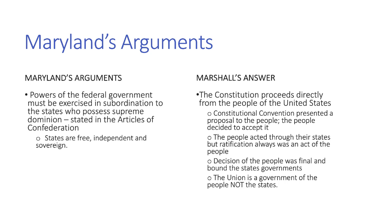Marshall essentially told Maryland: you accepted the Constitution, so you can't cry wolf now. John Marshall, the Chief Justice of the Supreme Court at the time and a Federalist, believed in a stronger federal government. His purpose was to expand the powers of the federal government.